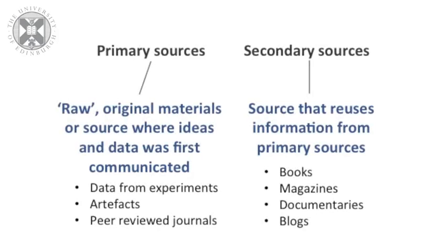Primary sources are original materials, or the source where the ideas and evidence were first communicated. Secondary sources are sources that reuse information from primary sources. Secondary sources are usually less reliable than primary sources, because the information might be misinterpreted when reported later or placed in a different context, and so may be less consistent with the original evidence. Some examples of reliable resources are peer-reviewed journals, where all published information has been reviewed and criticised by other experts in the field before publication.